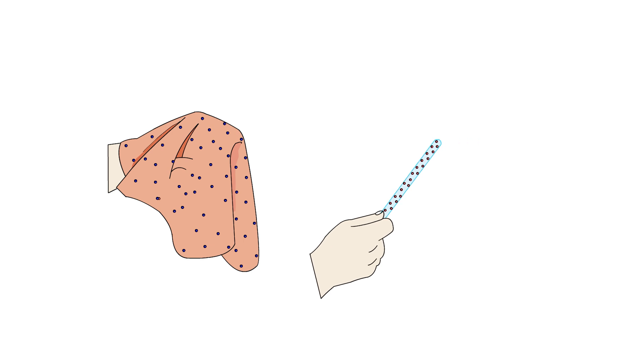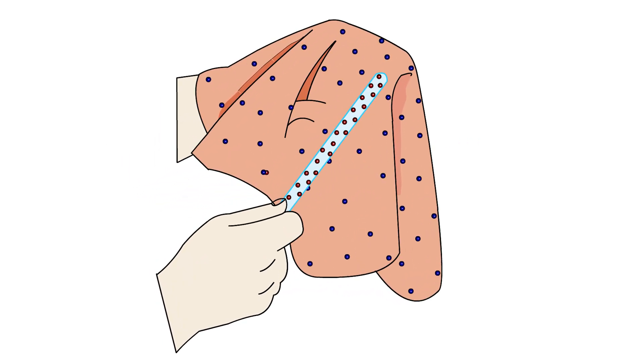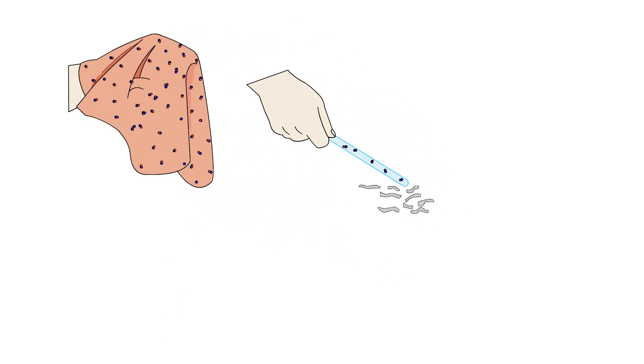Now if the electrified glass rod is brought in contact with silk, with which it was rubbed, they no longer attract each other. They also do not attract or repel other light objects as they did on being electrified.